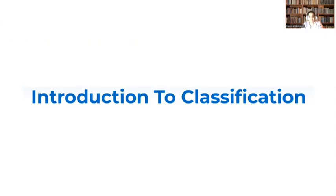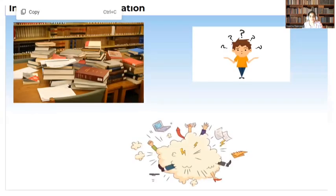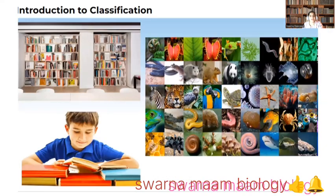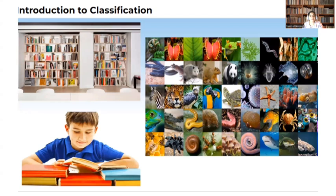So what is the necessity for classification? In a pile of books, if we have to identify a particular book when it is not classified, it is very difficult. When you go to a library, if a teacher asks you to take out a particular book from so many books, when they are not grouped or classified, it is very difficult to find the book belonging to a particular subject. Similar is the case with organisms present in the world. So there is a definite necessity for classification for easy identification and study of organisms.